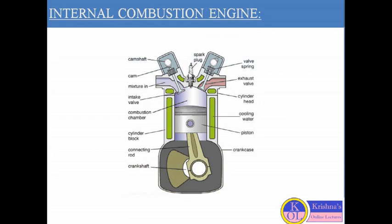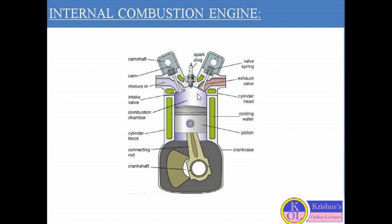The spark plug is situated at the top of the cylinder and helps to ignite the mixture of air and fuel. The spark plug generates a spark inside the cylinder which ignites the fuel. The combustion chamber is the space between the top of the piston and the cylinder head where ignition takes place. A cooling water jacket helps to maintain the temperature of the cylinder, which increases due to the ignition inside.